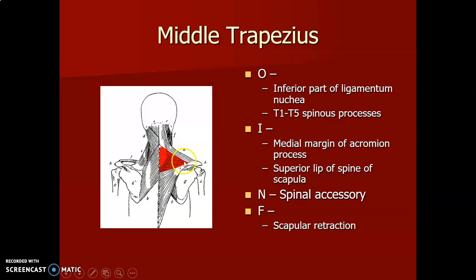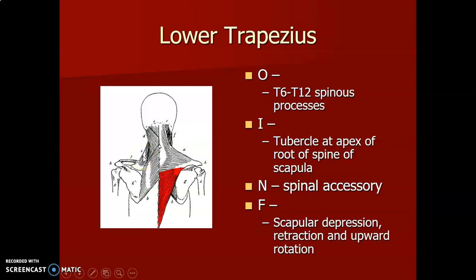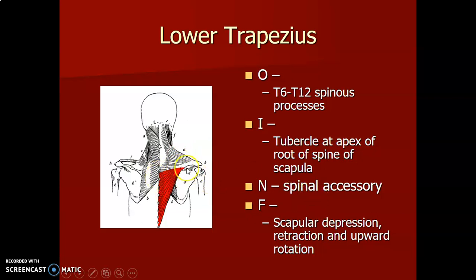The inferior fibers of trapezius originate from T6 to T12 spinous processes and insert onto the tubercle at the apex of the root of the scapular spine. They are also innervated by the spinal accessory nerve. Because they are below, they depress the scapula and cause retraction and upward rotation.